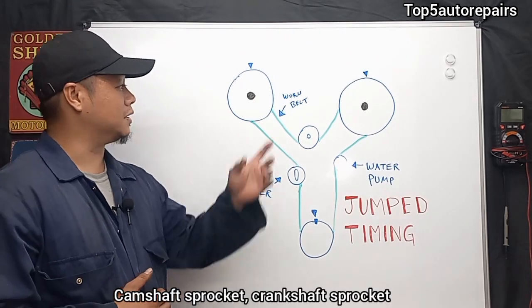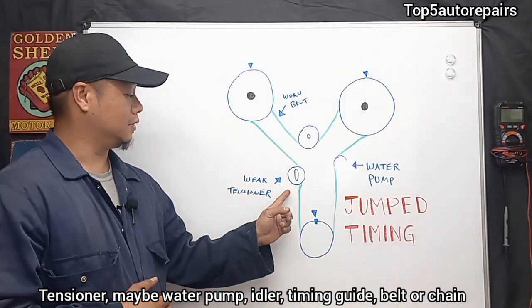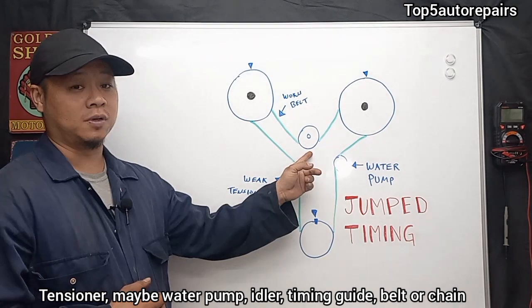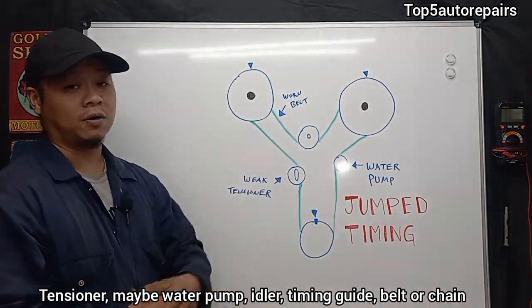Basically, the timing system consists of the camshaft sprocket, crankshaft sprocket, a tensioner, maybe a water pump, and either a pulley, timing guide, and timing belt or timing chain.